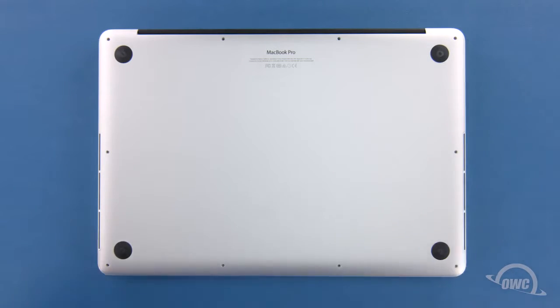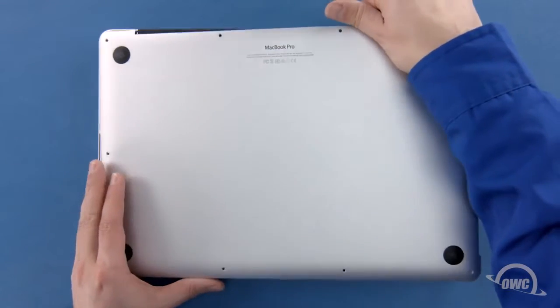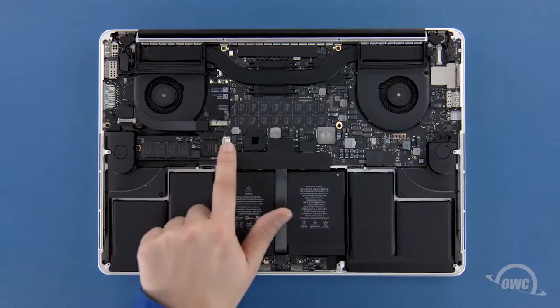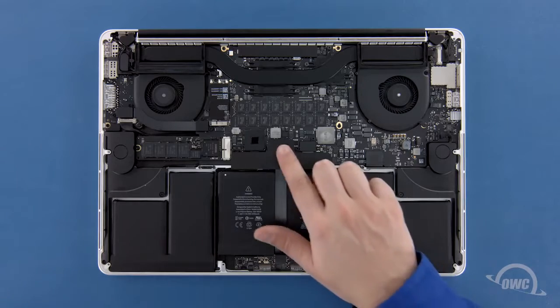We can now lift the bottom cover up and off. There's a snap on the underside near the center, so you may have to pull a bit to detach it. The SSD module is located here. First though, we'll need to detach the battery connector, which is located here.